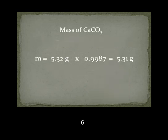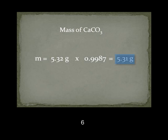To find the mass of calcium carbonate, multiply the starting mass times its purity. The mass of calcium carbonate in the experiment is 5.31 grams.